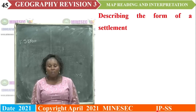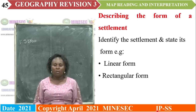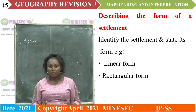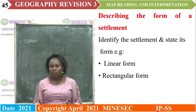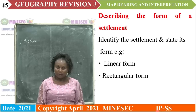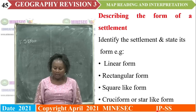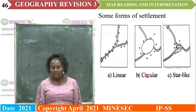The form of a settlement — what shape has that settlement taken? It can be a linear form — that is a line along a road or a river. It can be rectangular, taking a rectangular form. It can be in the form of a square, or a cruciform or star form. Some forms of settlement: linear, secular, star-like. These are some of the forms settlement can take.